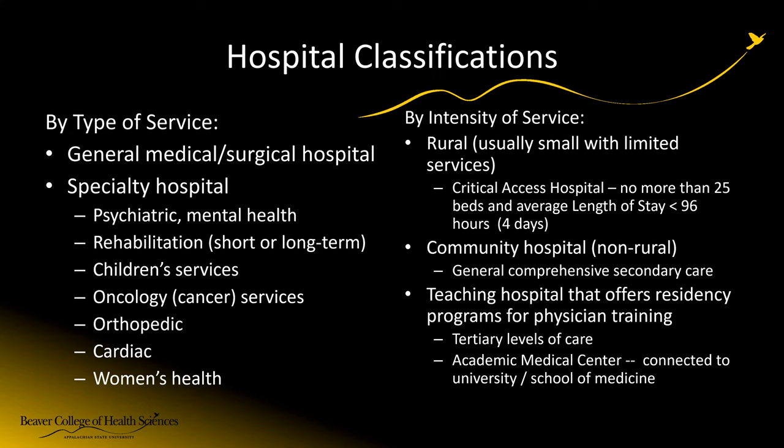We also classify hospitals by the intensity of service. Is this a rural hospital or a critical access hospital? A critical access hospital is a very small hospital with no more than 25 beds and an average length of stay less than four days — maybe a hospital up in the mountains where a patient gets helicoptered in, they take care of them, and it's really about that instant service for a rural population. Critical access hospitals do tend to have different reimbursement methods to keep them in business.